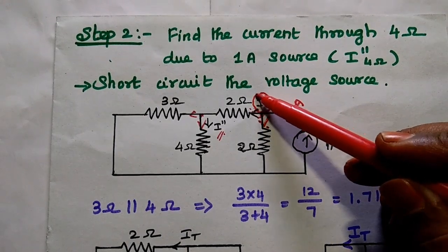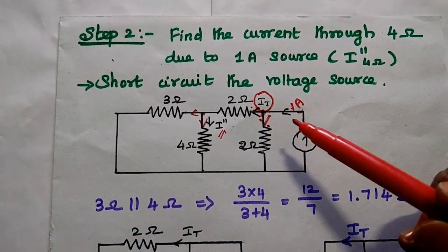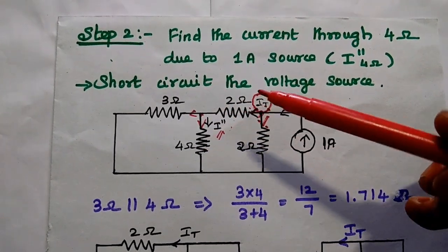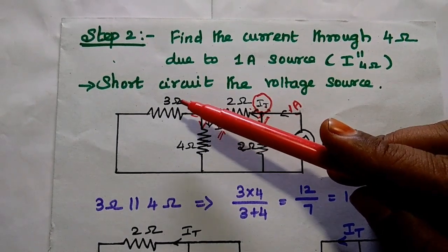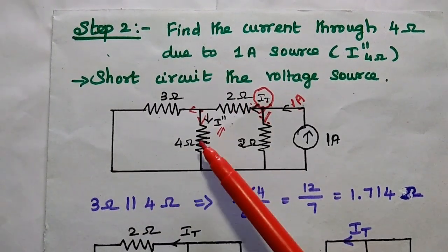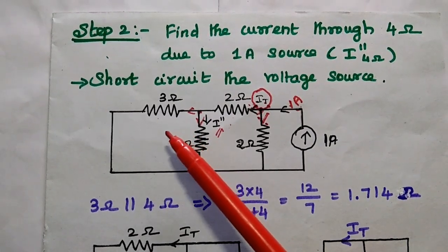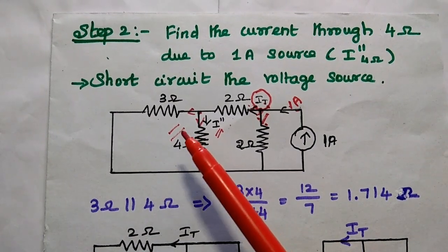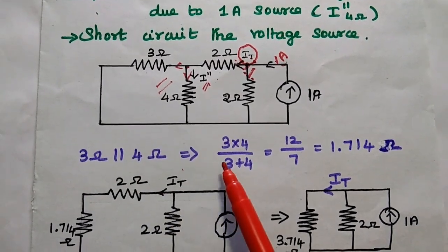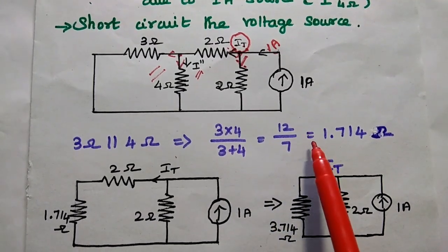We are going to find this current and then determine I double dash. For this current, we need the equivalent resistance of this portion. Here 3 ohm and 4 ohm are both in parallel — both ends are connected together. So 3 ohm in parallel with 4 ohm gives 3×4 / (3+4) = 1.714 ohm.